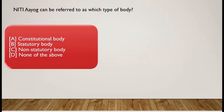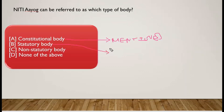NITI Aayog can be referred to as which type of body? A constitutional body is one mentioned in the Constitution. A statutory body is one made by an act or law of parliament — not mentioned in the Constitution but enacted by parliament. A non-statutory body is one not mentioned in the Constitution and not created by a statutory act, but formed by executive resolution of the cabinet.